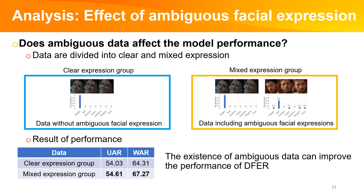We also explored how ambiguous facial expressions impact DFER performance. For this analysis, we split the original DFEW dataset into two categories: clear expression and mixed expression. The clear expression group excludes ambiguous facial data, while the mixed group includes both clear and ambiguous expressions. We ensured that both groups were of equal size. As the table illustrates, the model trained on the mixed expression group achieved higher scores, suggesting that incorporating ambiguous data can enhance DFER performance.